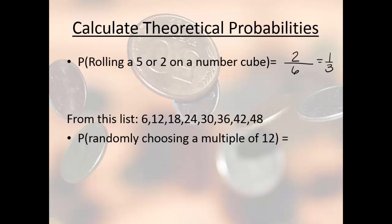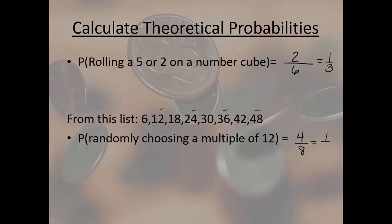Now let's look at the second example. We've got a list that is multiples of six from six to 48, and it's asking for the probability of randomly choosing a multiple of 12. Well, multiples of 12 are every other multiple of six, right? So there are four of those numbers out of eight numbers all together, which reduces to one half.